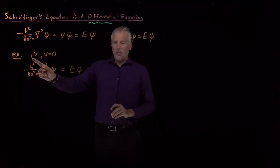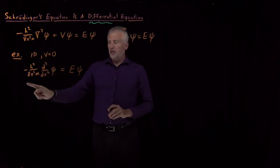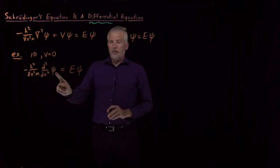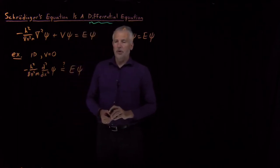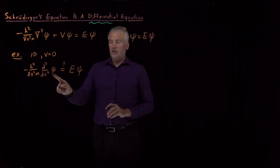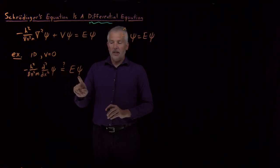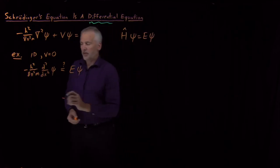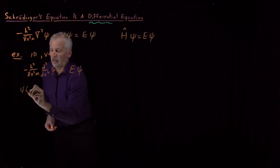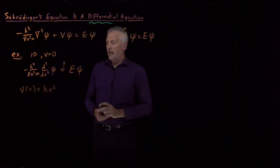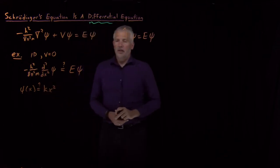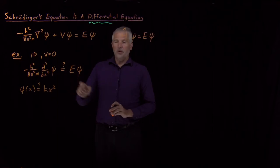So the one-dimensional Schrödinger equation with no potential energy simplifies to this form: the second derivative of the wave function multiplied by these negative constants is equal to energy times the wave function. The thing to keep in mind is, when we ask whether a function does or doesn't solve this equation, we're checking: when I plug the wave function into the left-hand side, does it equal what I get on the right side? So let's pick a candidate function — x-squared multiplied by some constant k.